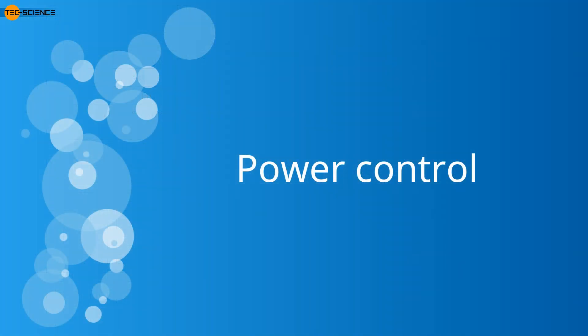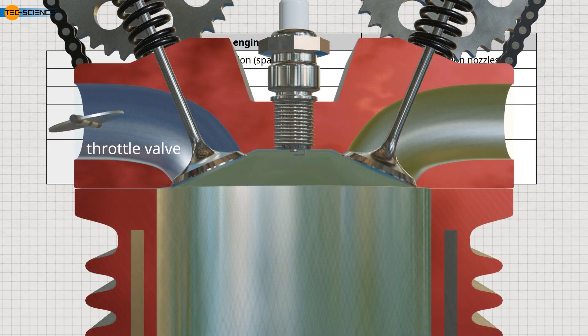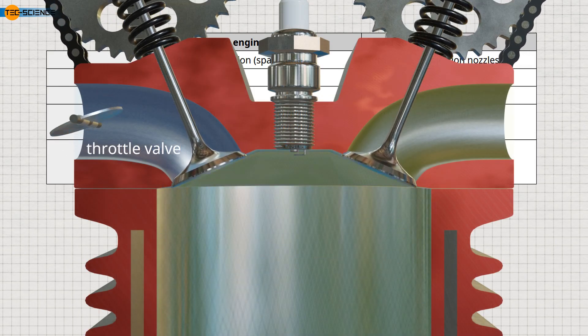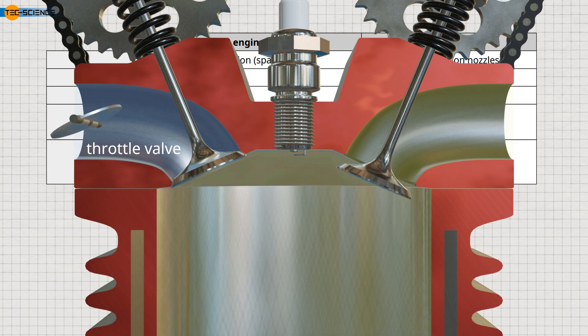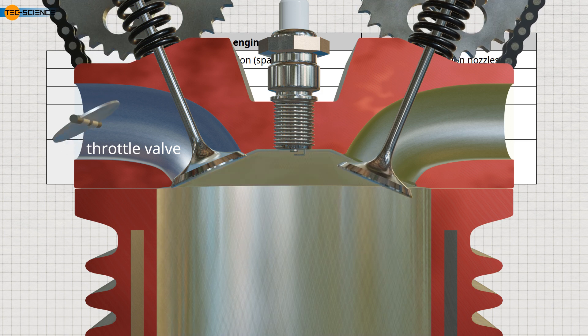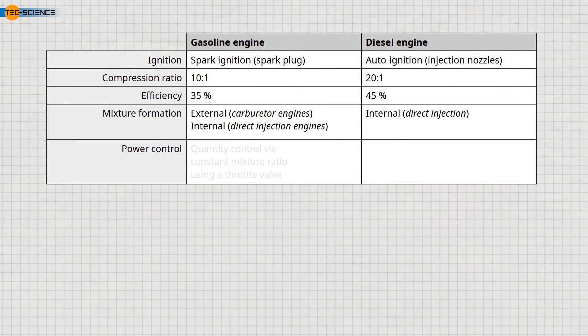There are also differences in the way engine power is controlled between gasoline and diesel engines. In gasoline engines, the throttle valve regulates the amount of charge entering the engine during the intake process. In naturally aspirated engines, the throttle valve is located in the intake manifold. Depending on its position, more or less charge passes through, ready to ignite. This is called quantitative mixture control.